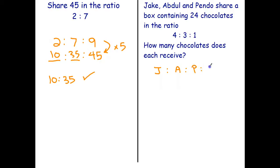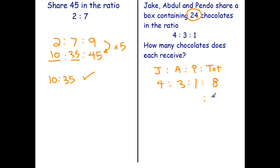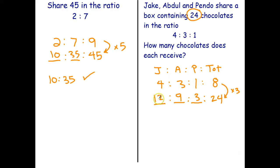We need that extra part to the ratio. Now the ratio here is four to three to one. How many parts in total? Four plus three is seven, plus one is eight. We also know the total number of chocolates is 24, so that gets written under the total. What do I multiply eight by to get 24? I multiply by three. One times three is three, three times three is nine, four times three is twelve.